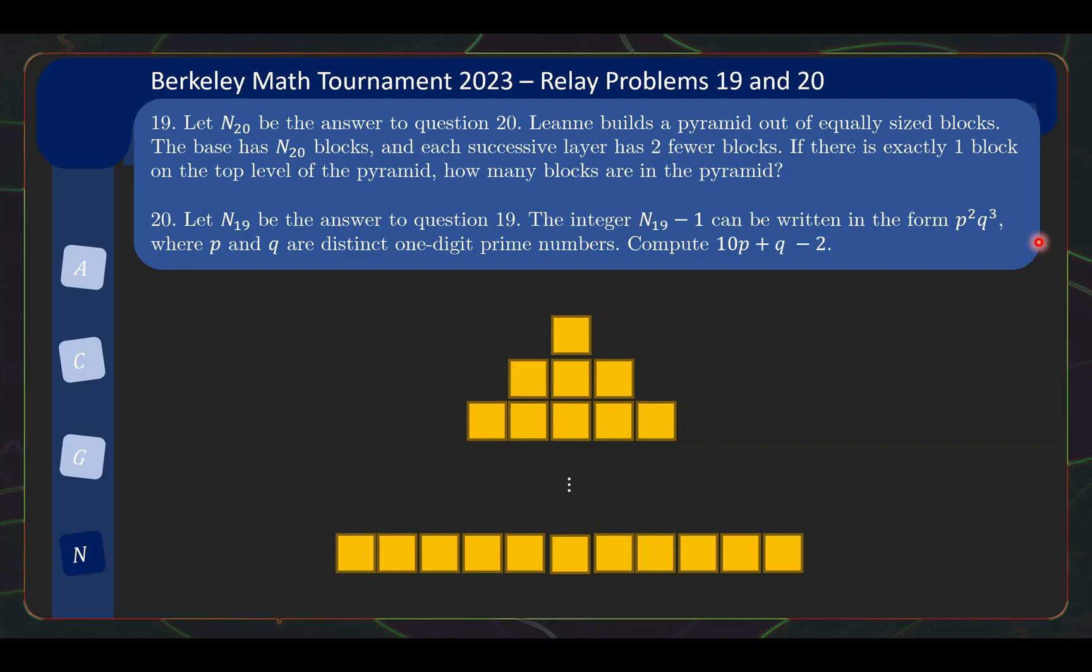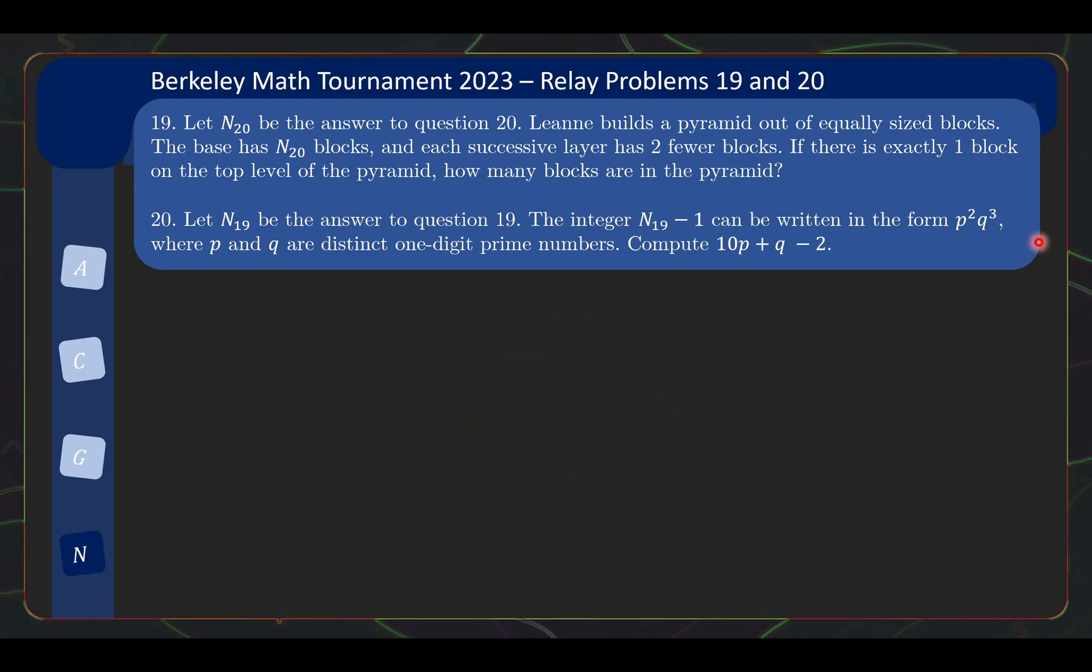Well, there's nothing much you can do except try solving question 19 first, and treating N20 as a variable for now. So if there's N20 blocks in the base, then the number of blocks in total is 1 + 3 + 5 + ... + N20. Well, for a start, this lets you conclude that N20 is an odd number. And also because if you look at the form of the answer for N20 given by this expression, we can conclude that q must be an odd number. Let's write this down because we will use this later.